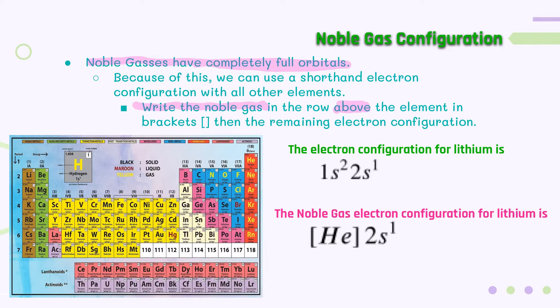So for example, the electron configuration for lithium is 1s2, 2s1. Now, if we were to find lithium on the periodic table right there, the noble gas that is in the row directly above it is helium.